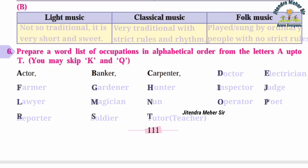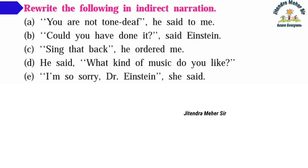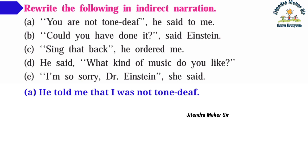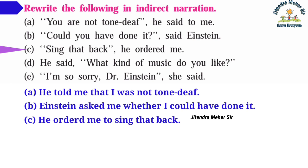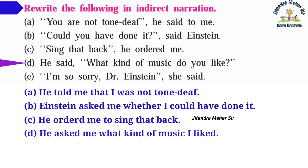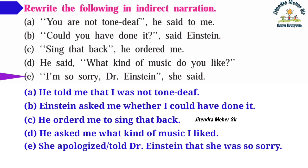Activity seven: Rewrite in indirect narration. (a) 'You are not tone deaf' — he told me that I was not tone deaf. (b) 'Could you have done it?' said Einstein — Einstein asked me whether I could have done it. (c) 'Sing that back' — he ordered me to sing that back. (d) 'What kind of music do you like?' — he asked me what kind of music I liked. (e) 'I am so sorry, Dr. Einstein' — she apologized or told Dr. Einstein that she was so sorry.